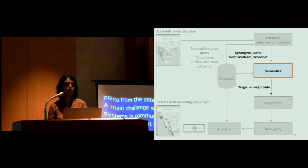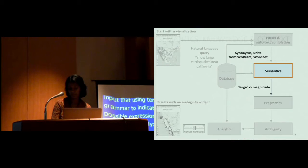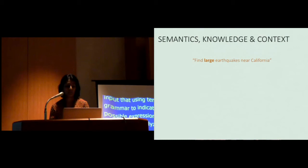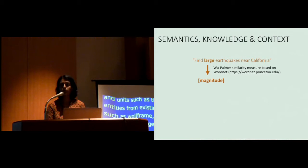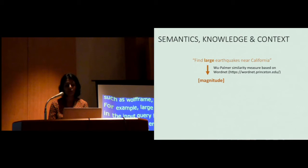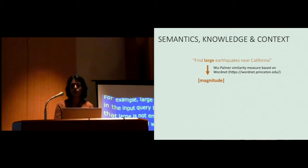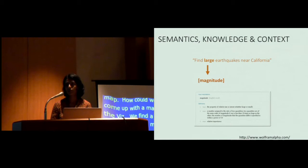As a user analyzes real-life data, the enrichment of the data's meaning with additional semantics helps with the overall expressiveness of these queries. The semantics module augments data with additional semantics in units, such as time, space, and entities from existing knowledge bases, such as Wolfram Alpha and WordNet. So here, for example, large is one of the tokens in the input query, but the problem is that large is not encoded as part of the map. So how do we interpret large and come up with a mapping to an attribute and value in the viz? Here we find that there is a strong semantic association between large from the query and magnitude encoded in the map using the Wu Palmer Semantic Similarity Measure on Word Senses in WordNet. Further, we can associate a range of magnitude values to the term large based on the description of magnitude shown here in Wolfram Alpha.